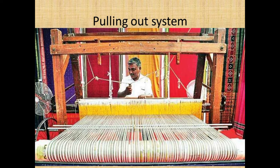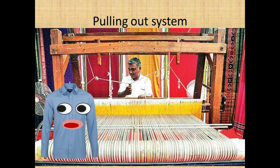The weaver doesn't know the real price at which the trader sells the cloth. The merchant sells it to the garment factory and gets a good amount, along with name, fame, and status in the market. Weavers invest their savings or borrow money to buy looms — one loom costs around twenty thousand rupees. A weaver works twelve hours a day and gets only rupees three thousand five hundred, meaning the weaver is at a great loss.